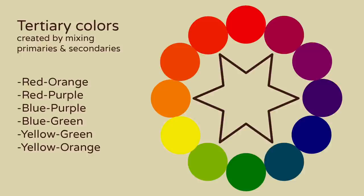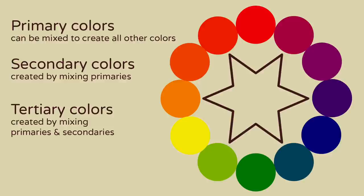And now we have our basic color wheel. So to recap: you start with primaries, mix those to create secondaries, then mix one of each to create tertiaries.